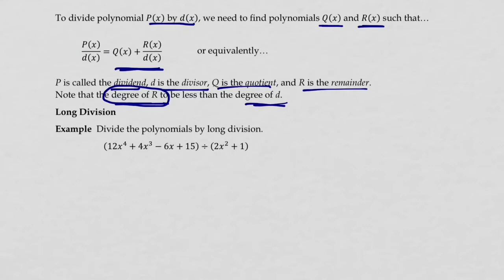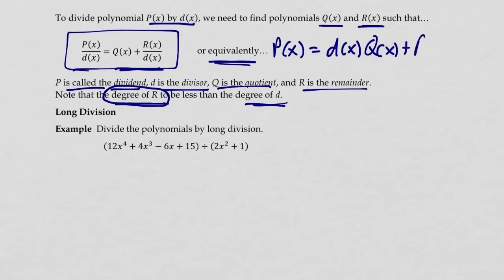Let me say there is an equivalent way we can write the final answer. If we multiply all of these terms by D(x), we get an expression that's equal to the original P(x) dividend. So P(x) then becomes equal to D(x) times Q(x) plus R(x). And that can sometimes be a very nice way to look at the final answer.